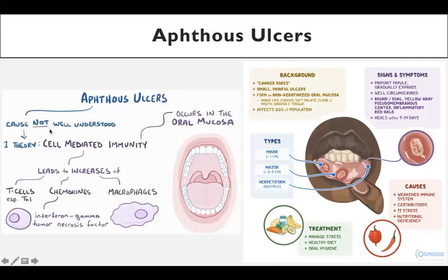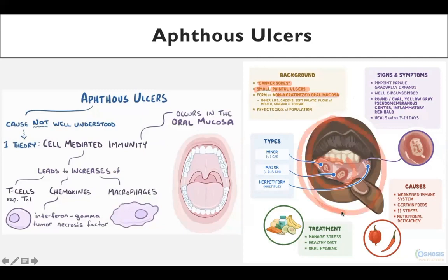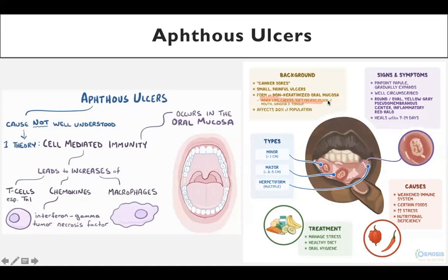One theory is that cell-mediated immunity occurs in the oral mucosa, leading to increased T cells, chemokines, and macrophages releasing interferon-gamma and tumor necrosis factor alpha, leading to aphthous ulcers. These are small, painful, idiopathic ulcers appearing on the inner lips or oral cavity on non-keratinized mucosa. They are found on inner lips, cheeks, soft palate, floor of mouth, gingiva, and tongue, affecting 20% of the population.